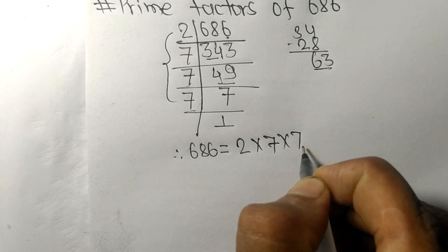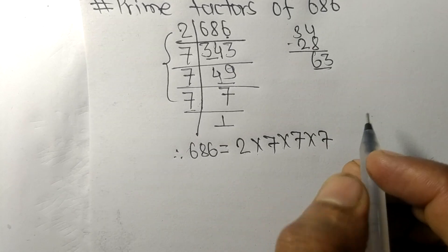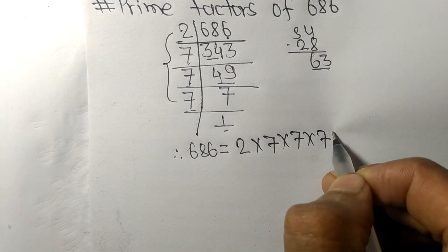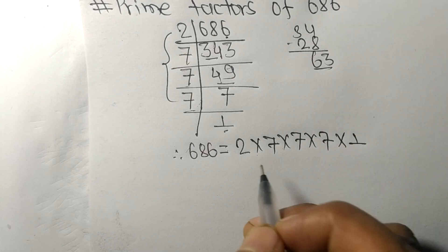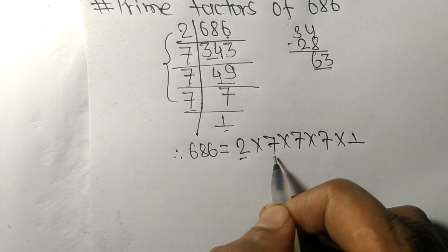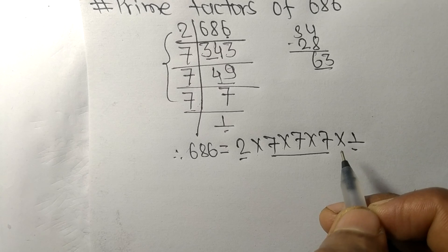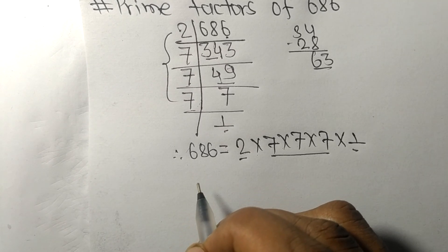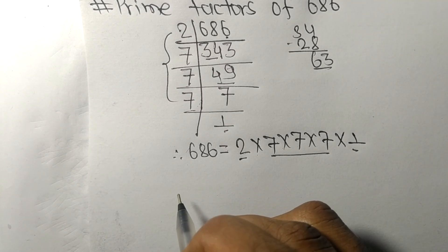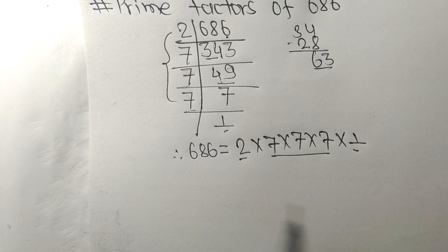Therefore 686 is equal to 2 times 7 times 7 times 7, and from here it is 1. So 2, 7, and 1 are the prime factors of 686. That's all for today, thanks for watching.